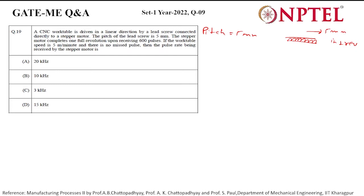The stepper motor completes one full revolution upon receiving 600 pulses. So one revolution by 600 pulses. And in 600 pulses, our lead screw will move by 5 mm. That we have got here.